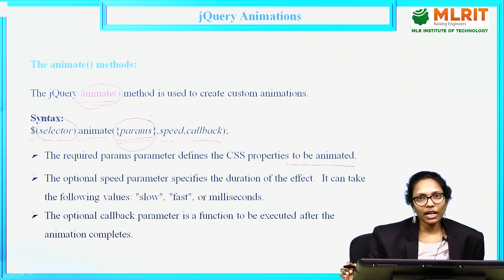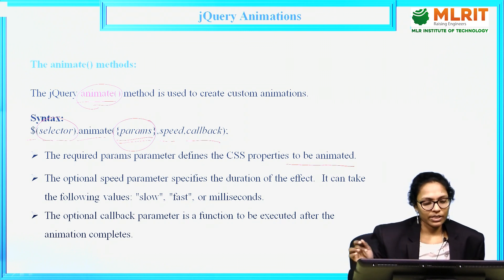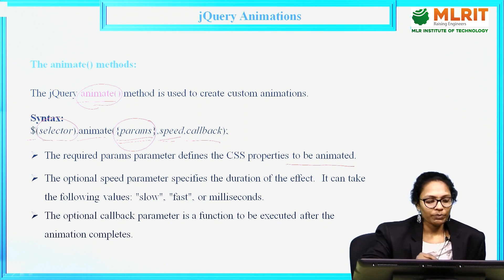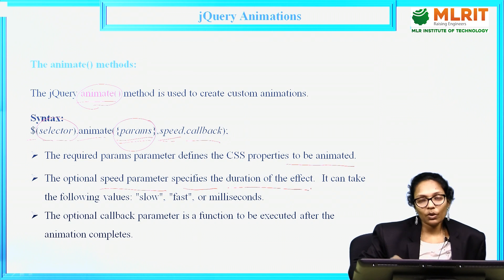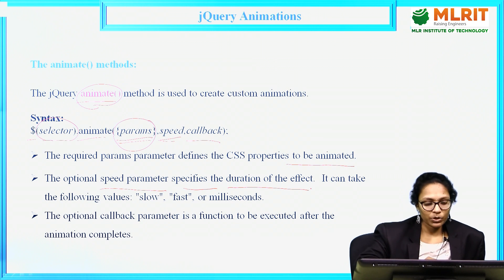We may have multiple parameters — multiple things you may change. I may change height and width at a time, or the color and font size at a time. Multiple parameters will be passed within these curly braces. Coming to the second parameter, speed — it specifies the duration of that effect, how much time you want to apply that animation effect. There are three possible values: slow, fast, or milliseconds.